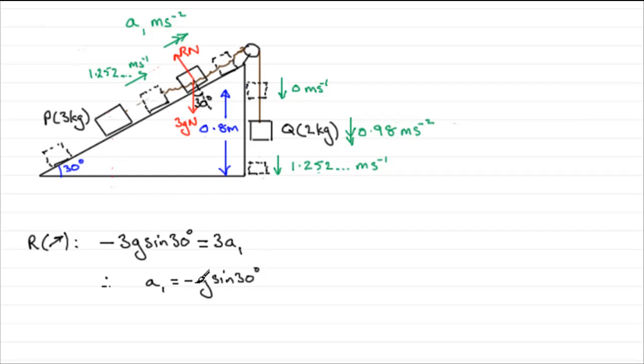So this is our resultant force F, if you like, and it equals mass times acceleration. And the mass is 3, and the acceleration is A1. So what does A1 equal? Well, if we divide both sides by 3, you get that A1 is equal to minus G sine 30. The minus sign is very important here because it's showing us that it's decelerating as we would expect. It's losing speed.